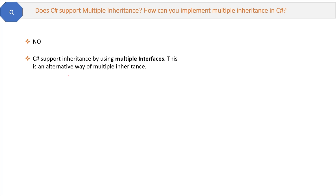When we say C# does not have multiple inheritance, that normally means multiple classes. But there is an alternative way — by using multiple interfaces, we can achieve inheritance in C#.